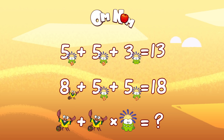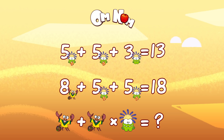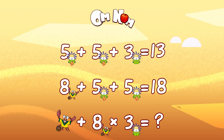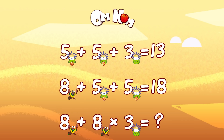Let's check it: 8 plus 5 plus 5 equals 18. Well done! And the last line — crab plus crab times Om Nom. Multiplication — you go first. So 8 times 3 equals... it's a tricky one — equals 24. And the very last thing: 8 plus 24 equals 32. That's right!